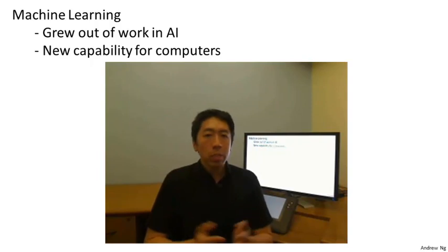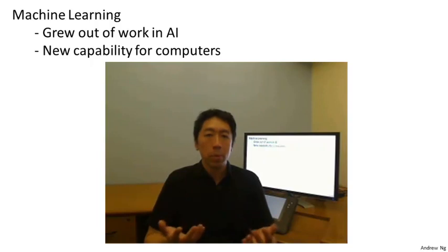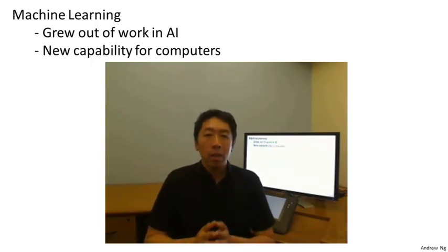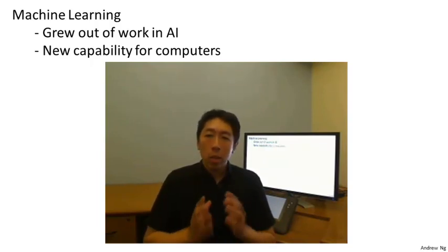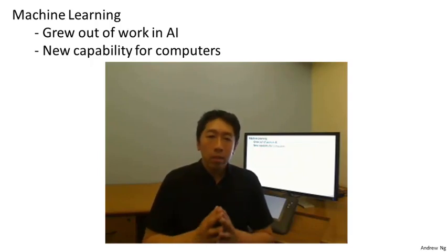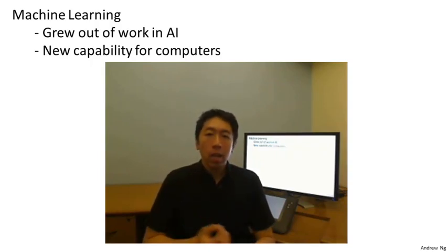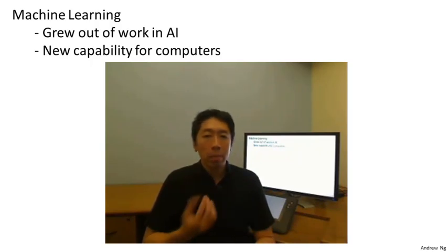But for the most part, we just did not know how to write AI programs to do the more interesting things, such as web search, photo tagging, or email anti-spam. There was a realization that the only way to do these things was to have a machine learn to do it by itself. So machine learning was developed as a new capability for computers, and today it touches many segments of industry and basic science.